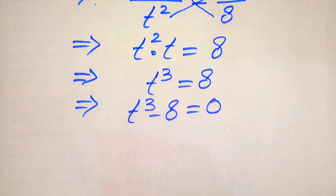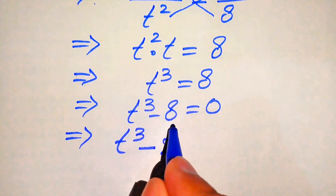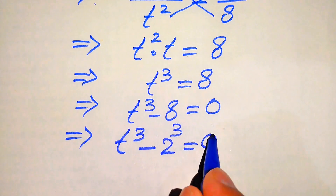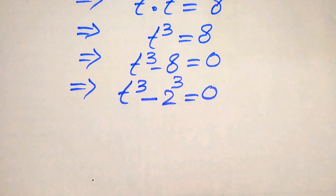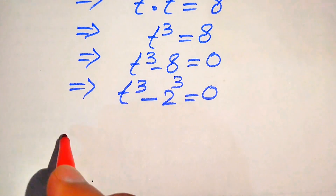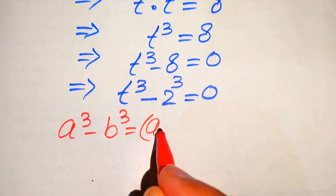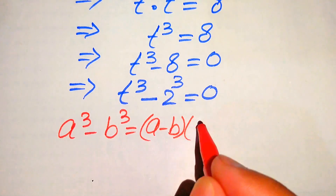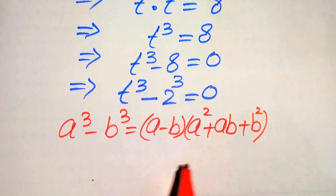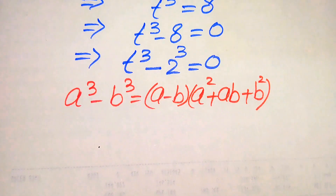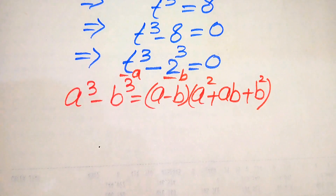We rewrite the equation as t cubed minus 2 cubed equals 0. We solve this using the difference of cubes formula: a cubed minus b cubed equals (a minus b)(a squared plus ab plus b squared). Here the base of the first term is our a and the base of the second term is our b.